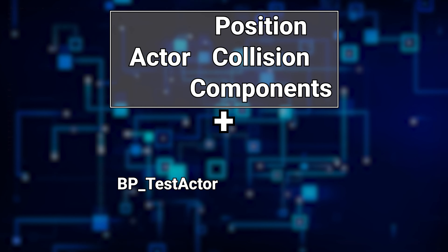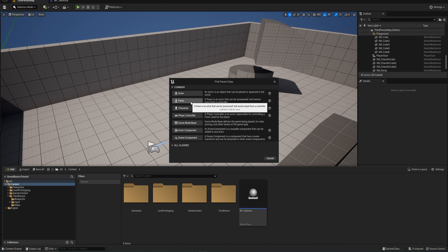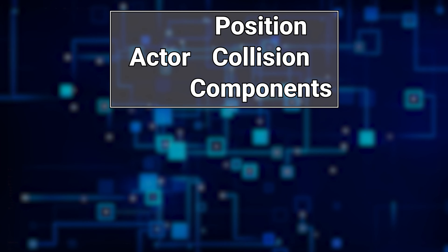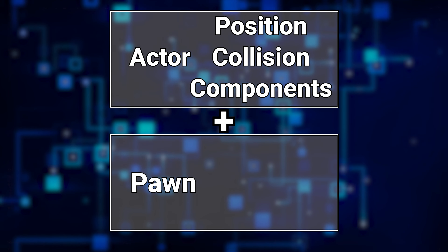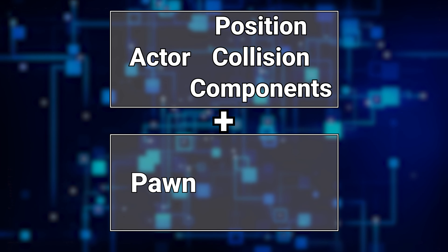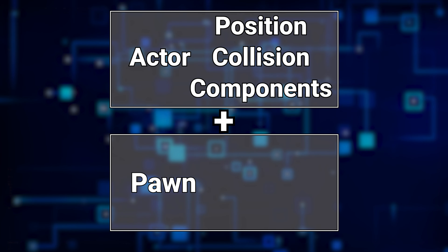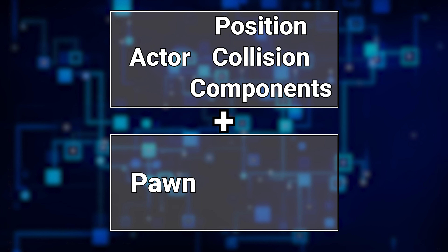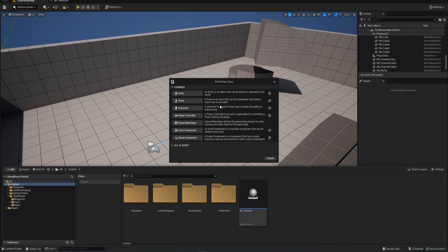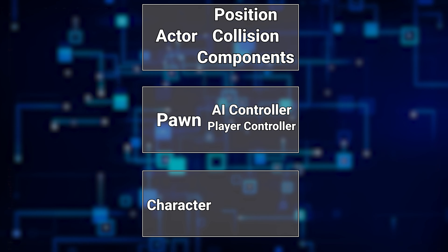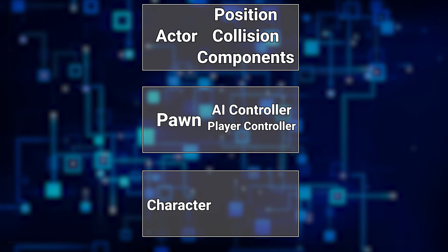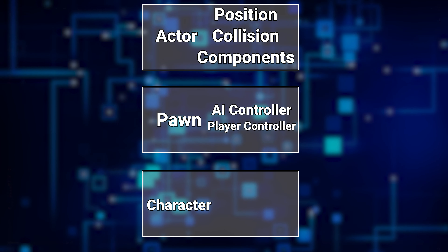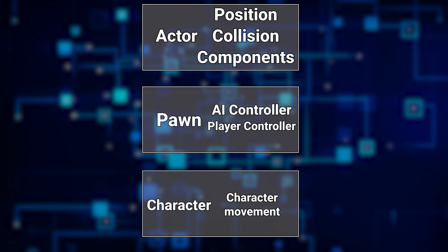If we go back and make another blueprint class, that is exactly what a Pawn does. A Pawn is a pre-existing extension of an Actor, and this relationship is what we call a parent-child relationship - Actor is the parent to the Pawn. A Pawn takes all the functionality that the Actor has and adds its own on top: a Pawn is an Actor that can be possessed and receive inputs from a controller, which can be either a player controller or an AI controller.